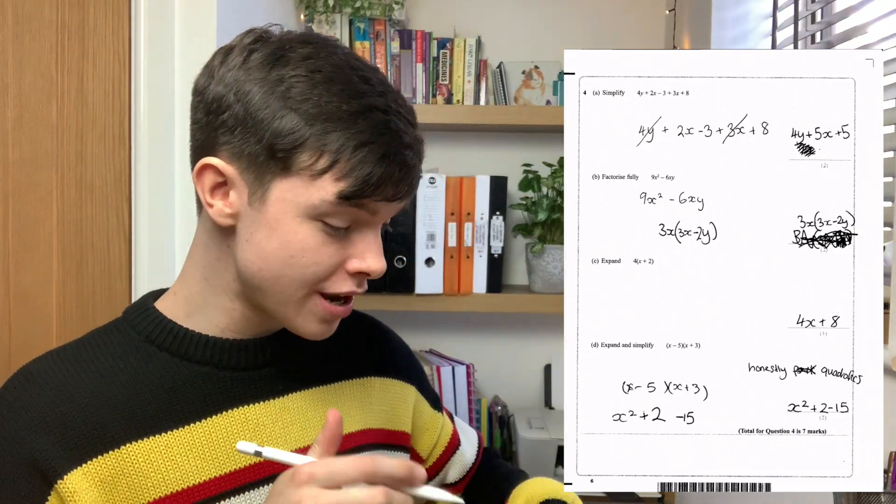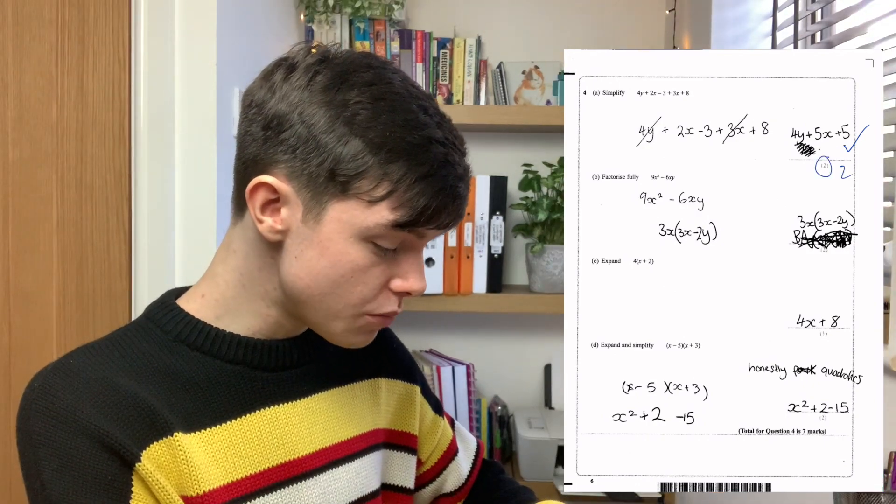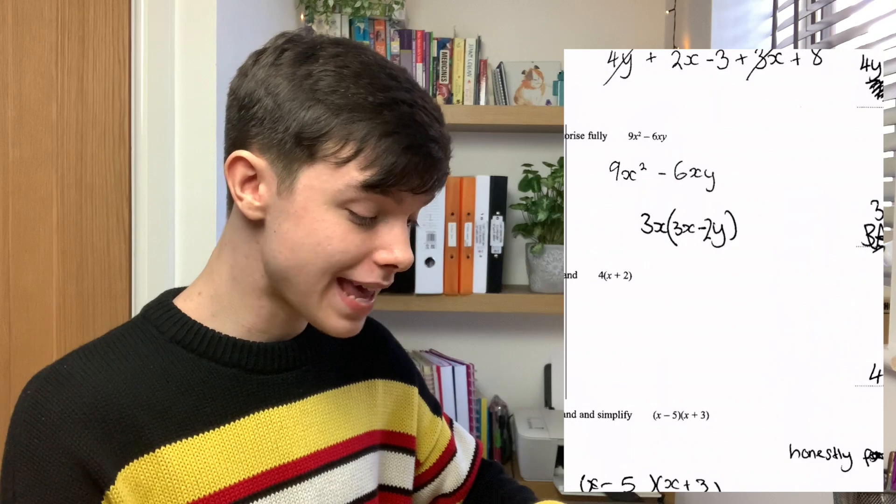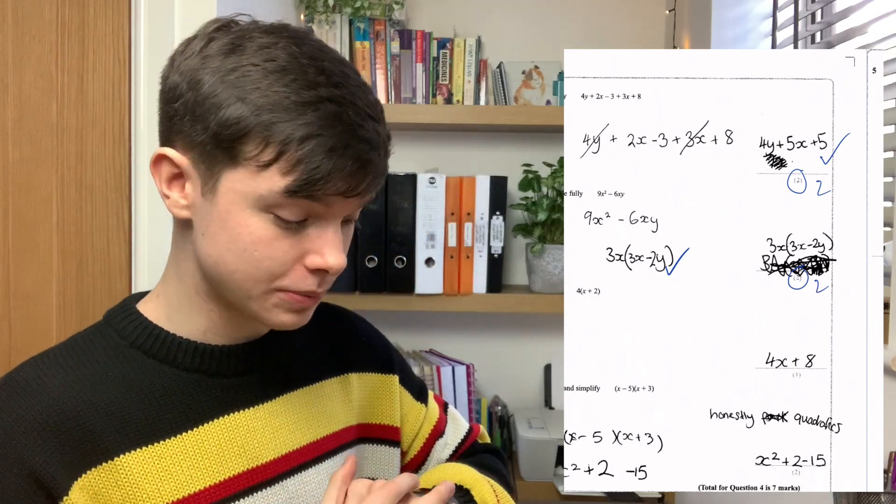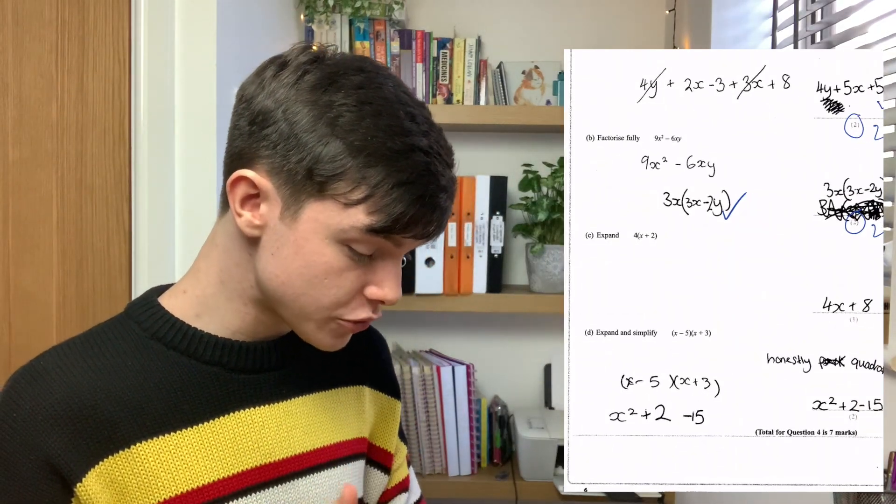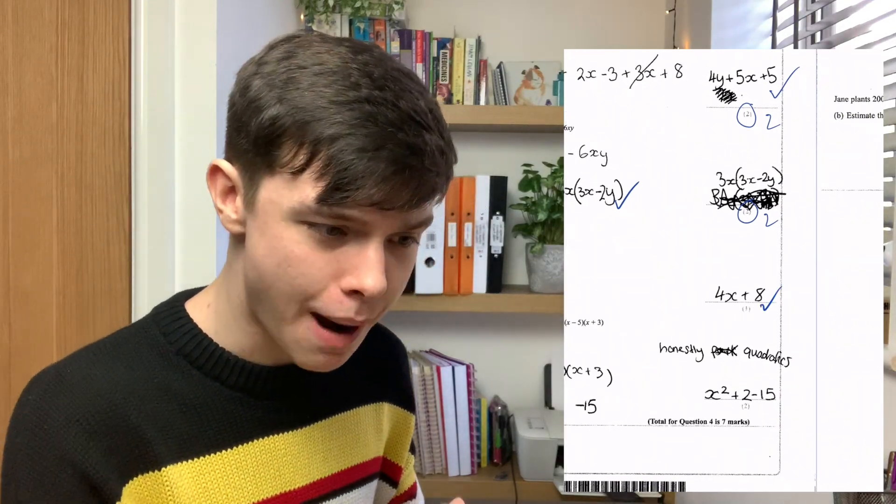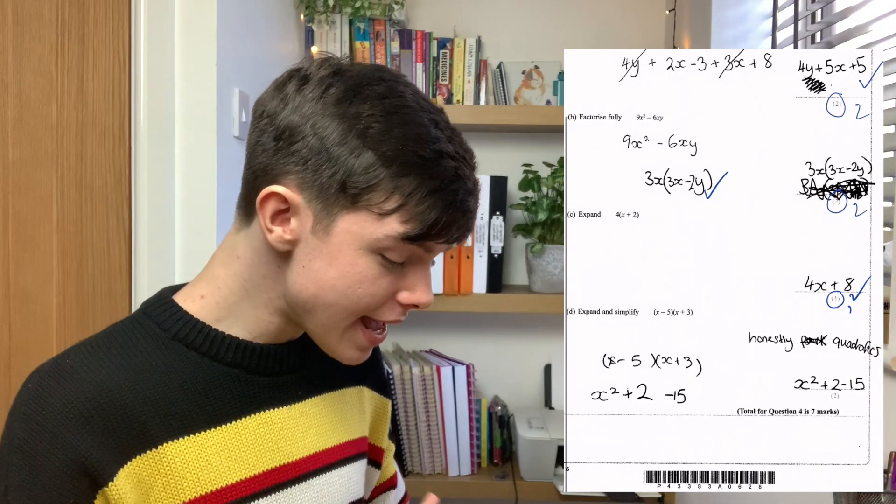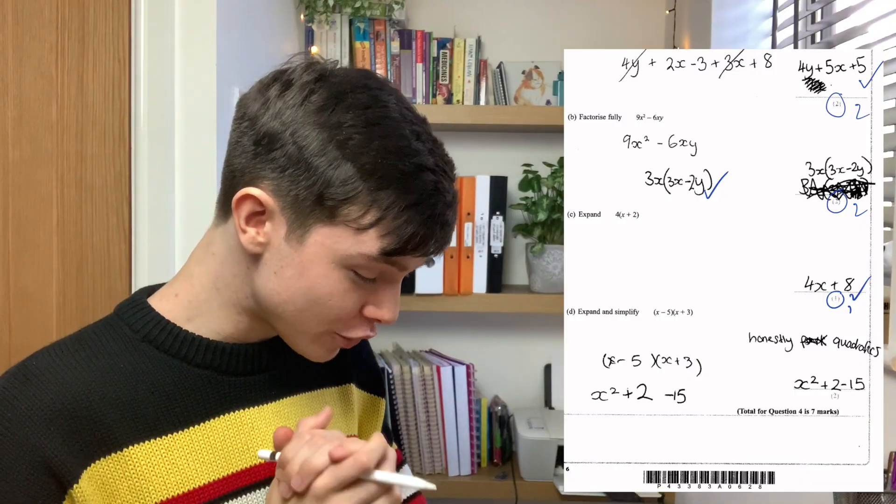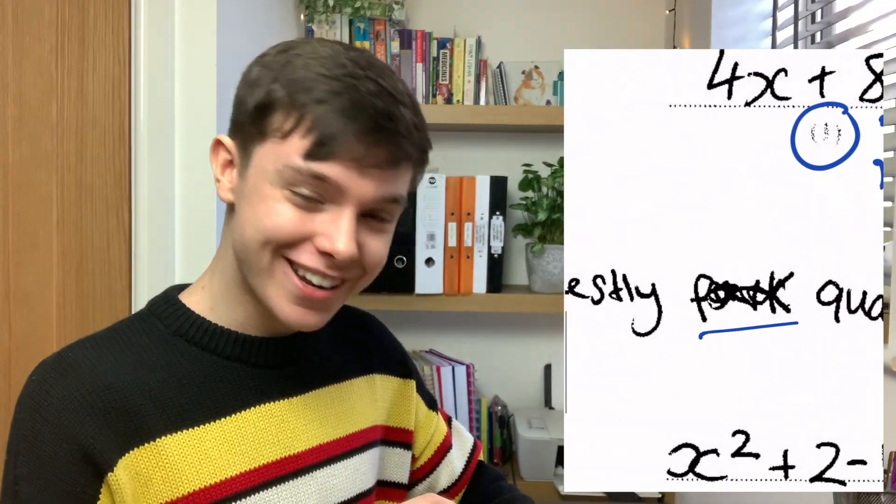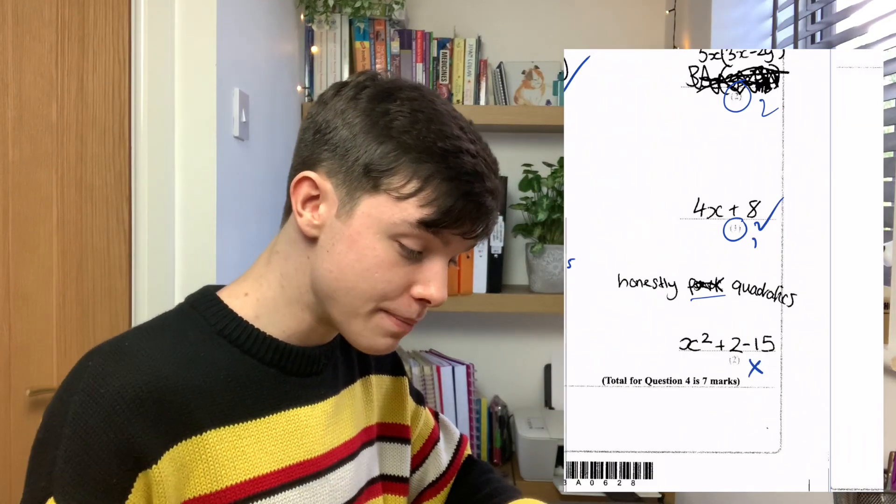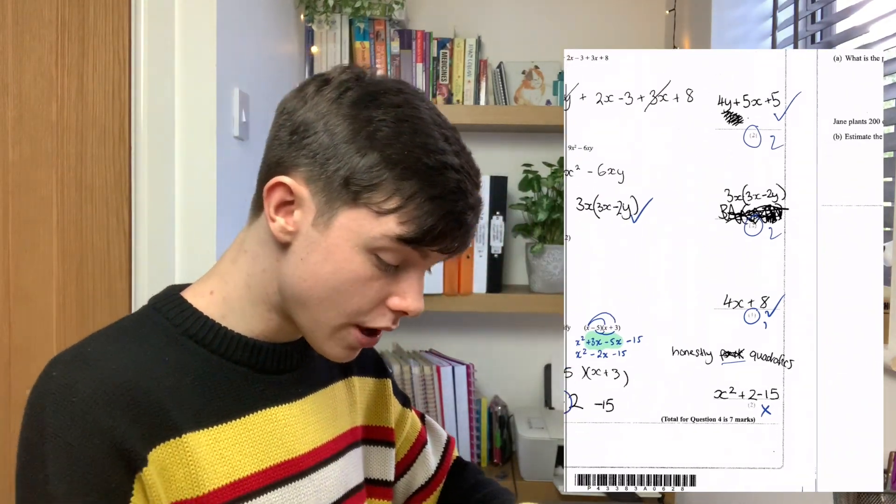Let's move on to question four. Question four was an algebra question and that is correct. Next question. We wanted to factorize 9x squared minus 6xy. And is that correct? It is. There is two marks. Next question says expand 4 all multiplied by x plus 2. And it is 4x plus 8. That's just one mark. Next question says x minus 5 all multiplied by x plus 3. Oh, no. Very, very close. That should be a negative. Also, what happened here? We've missed the x off. We can't give any marks there. So, out of the seven marks, we got five. Not bad.